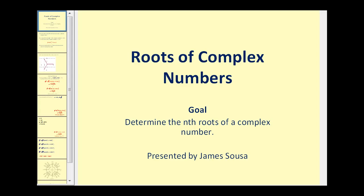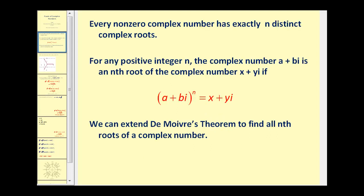Welcome to a presentation on the roots of complex numbers. The goal of the video is to determine the nth roots of a complex number. Every non-zero complex number has exactly n distinct complex roots. For any positive integer n, the complex number a+bi is the nth root of a complex number x+yi, meaning if you take a+bi and raise it to the power of n and it equals x+yi, then a+bi is an nth root.